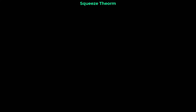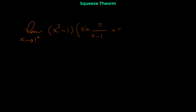Let me show you one more example of the squeeze theorem and then we'll finish this video. We want to prove — again with the squeeze theorem — that when x approaches 1 from the right, the limit of (x² − 1) · [sin(π/(x−1)) + cos(2π/(x−1))] equals 0.